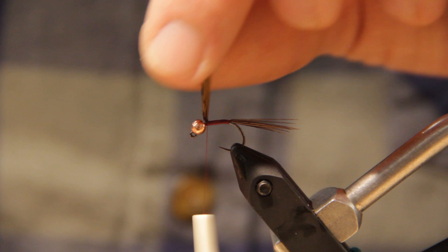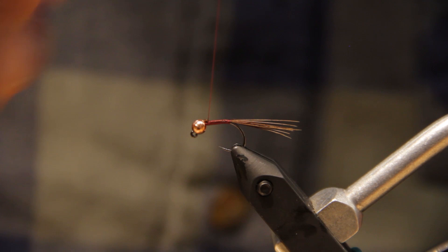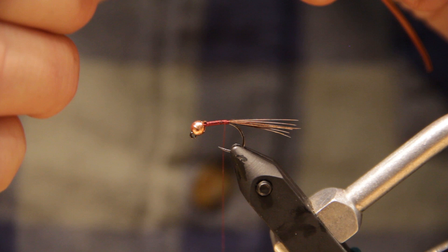I'm gonna take that just behind that bead, trim, and then I'm going to take a vinyl rib. And what I want to do with this, I'm going to come back to the back of the fly, and we're going to tie it in.